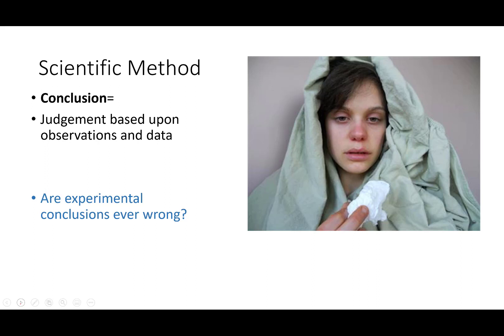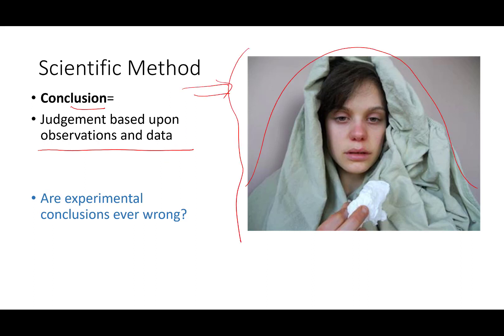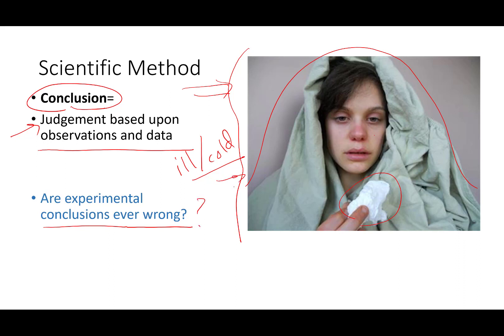After you make observations and form a hypothesis and gather data, in science you draw a conclusion. A conclusion is a judgment based upon observations and data. Going back to our picture of the person under the blanket with the red nose and tissue — our conclusion might be this person is ill and has a cold. But are conclusions ever wrong? Of course they are. Maybe this person doesn't have a cold — maybe it's allergies, or maybe they're not sick at all and just had a fight with their significant other and are sad and crying. In science, sometimes we are wrong, and the beautiful thing about good scientists is they admit it.